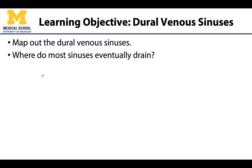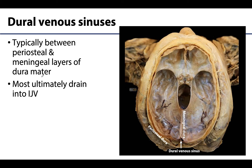We are going to focus on locations and where these will eventually drain on their path back to the heart. These are specifically located between the two layers of the cranial dura, with a few exceptions. The meningeal dura will reflect away from the periosteal dura, forming the dural venous sinuses. For our purposes, we can think of them as like veins in terms of function — draining blood from the brain and internal cranium to return to the heart. They are very structurally sound and do not collapse because of their attachment to the bone via the periosteal dura.